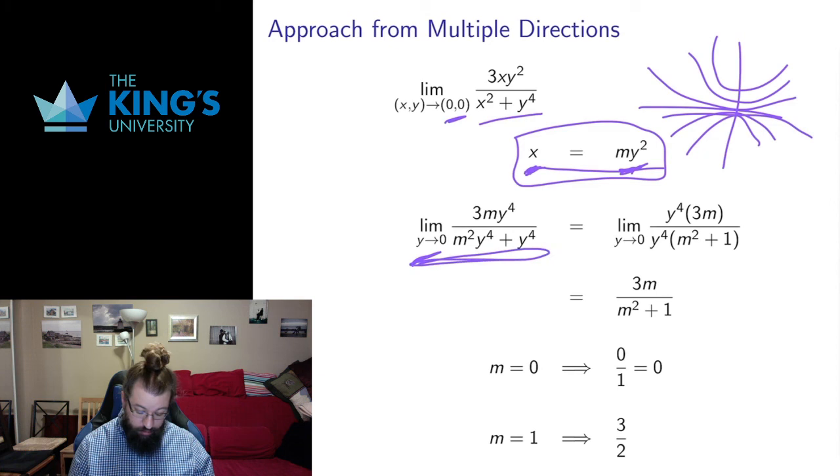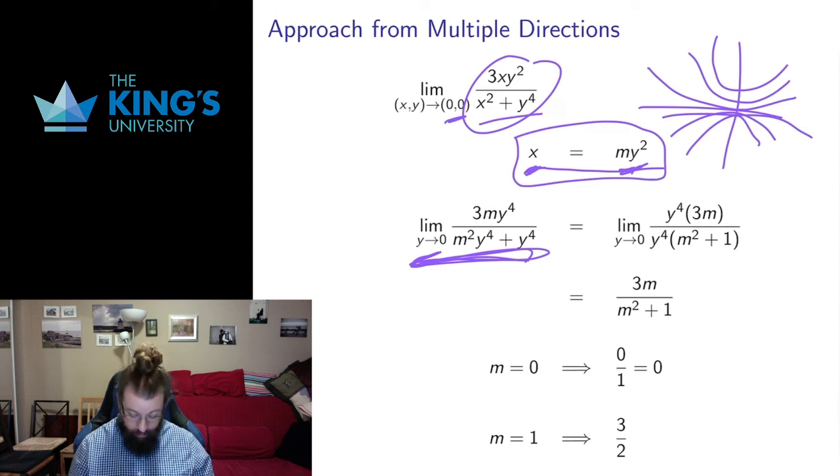I get these limits that are going to tell me what this does approaching along these parabolic paths. I have y to the 4 in all these terms, so I can factor y to the 4 out, cancel it off. I have no more y's left, so I can evaluate the limit.